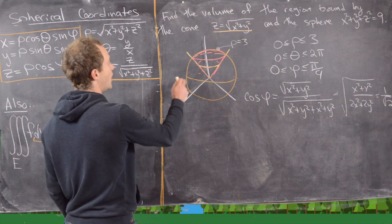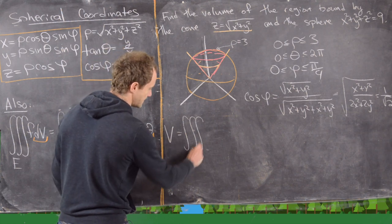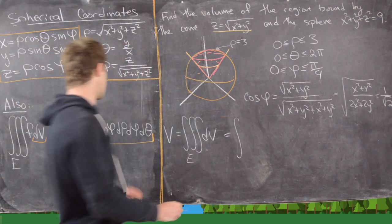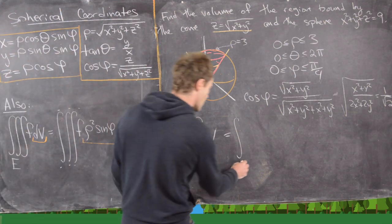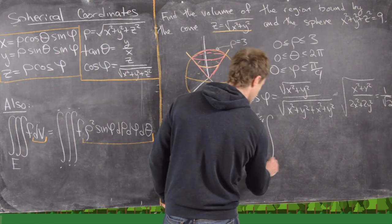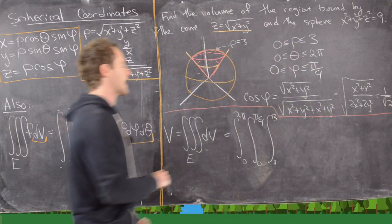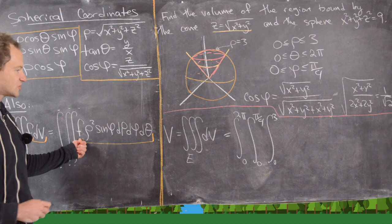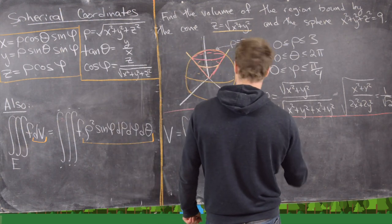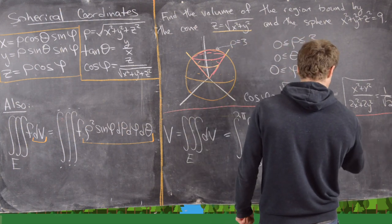The volume of this region is the integral over the region of dV, converted to spherical coordinates. We integrate: θ from 0 to 2π (outermost), φ from 0 to π/4, and ρ from 0 to 3. Our function f is just the constant 1, so the integrand is ρ²·sinφ dρ dφ dθ.